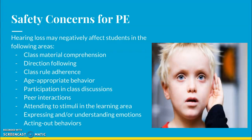The following are some safety concerns relating to how hearing loss may negatively affect students in the classroom. These areas include comprehending class material whether in PE or general education, following directions, adhering to class rules, displaying age-appropriate behavior, participating in class discussions or group work, interacting with peers, attending to stimuli in the learning area, and expressing or understanding emotions. Acting out behaviors may also be shown.